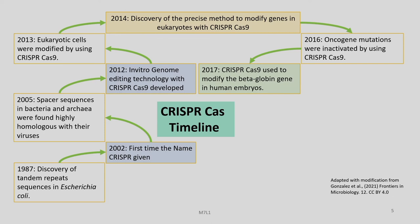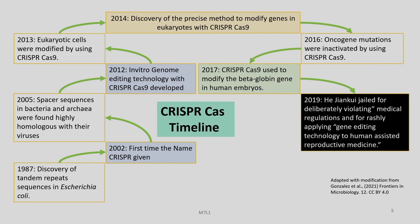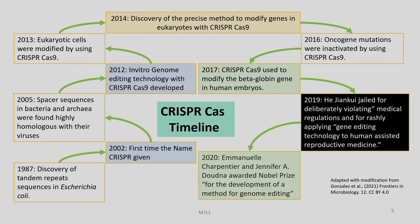In between these discoveries, there are many important developments which we are not discussing in detail — kindly refer to available literature if you are interested. 2019 is considered a black year in a way: He Jiankui in China was jailed for deliberately violating medical regulations and rashly applying gene editing technology to human assisted reproductive medicine. In 2020, amidst the COVID-19 pandemic, Emmanuelle Charpentier and Jennifer Doudna were awarded the Nobel Prize for the development of a method for genome editing, which was basically the CRISPR-Cas9 technology.